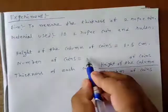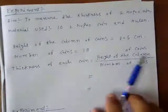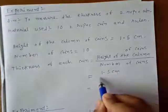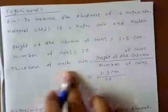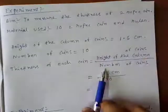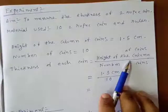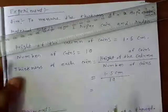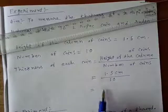Now number of coins is 10. So height of the total column is 1.5 cm and number of coins is 10. The thickness of each coin obviously given by height of the total coins divided by number of coins. We have already discussed this concept in the previous class. I have already edited the video with some pictures or screenshots.